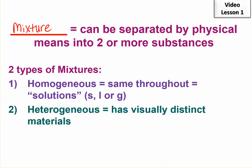Heterogeneous means that you have distinct materials. In other words, like cottage cheese, Italian dressing. You can see different types of materials present.